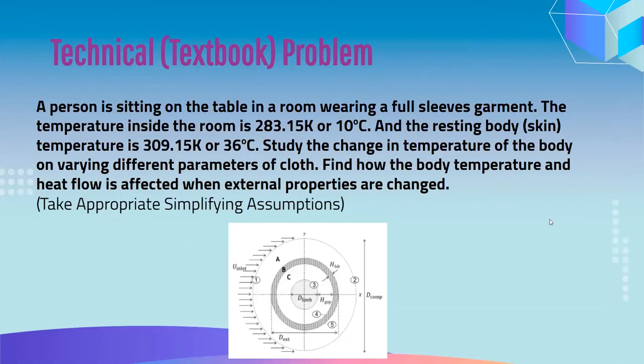Coming to the technical problem statement — this is a textbook problem. A person is sitting at a table in a room wearing full sleeves garment. The room temperature is 10°C and the resting skin temperature is 36°C. We study the changes in body temperature on varying different parameters of the clothes, and find how body temperature and heat flow are affected when external properties are changed. We will take several additional assumptions to solve this problem.